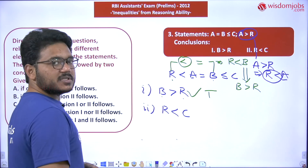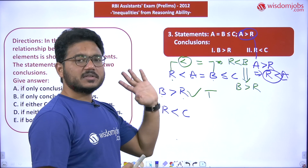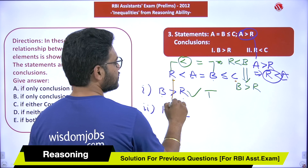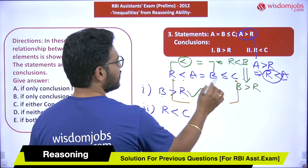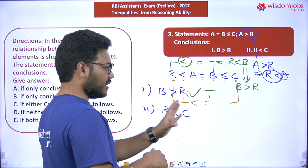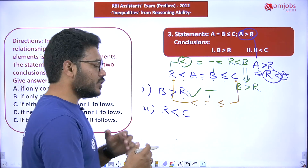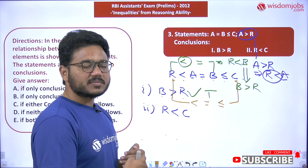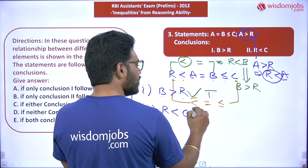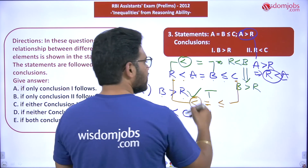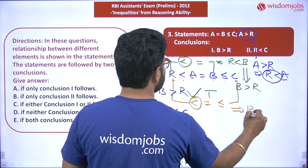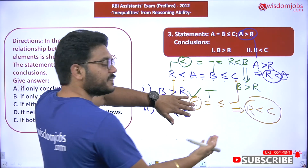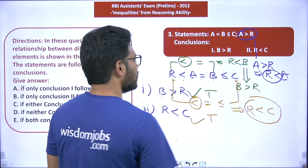The second conclusion is R < C. We locate R and C in the merged statement: R is at one end and C is at the other. The symbols between them are 'less than', 'less than or equal to', and 'less than or equal to'. We prioritize the 'less than' symbol, so the relationship between R and C is R < C — which matches Conclusion 2 exactly. So Conclusion 2 is also true.